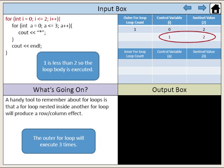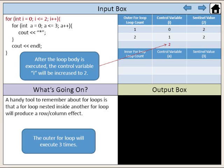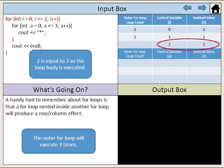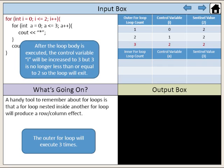One is less than two, so the loop body is executed. After the loop body is executed, the control variable i will be increased to two. Two is equal to two, so the loop body is executed. After the loop body is executed, the control variable i will be increased to three, but three is no longer less than or equal to two, so the loop will exit.